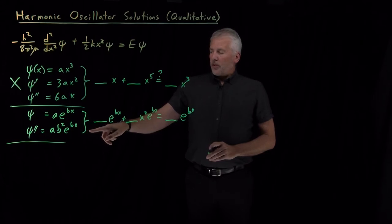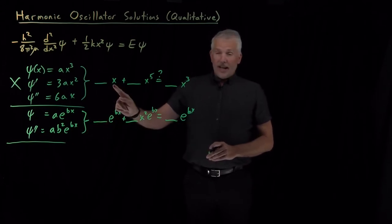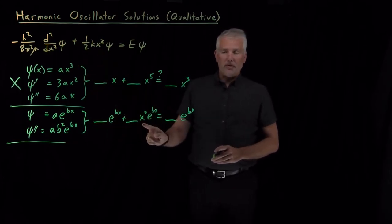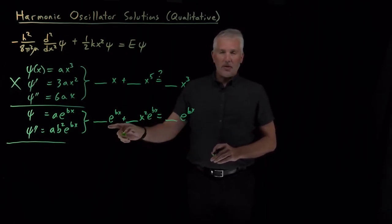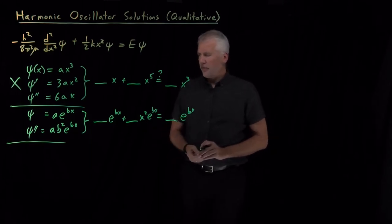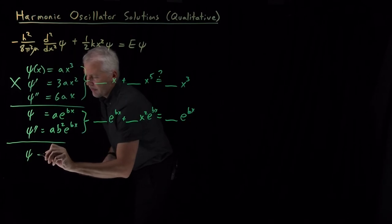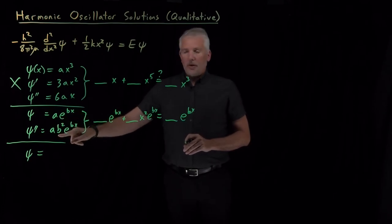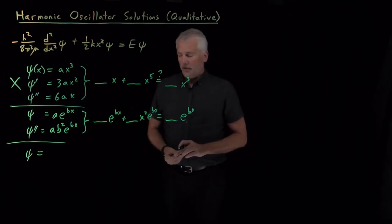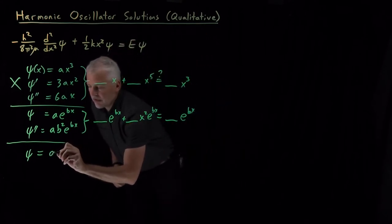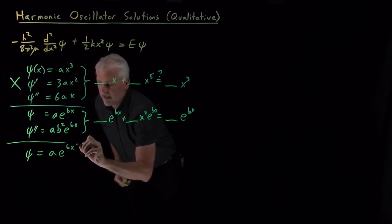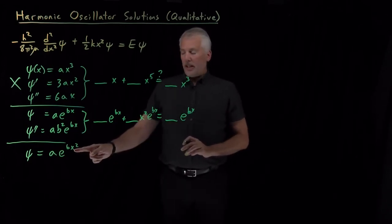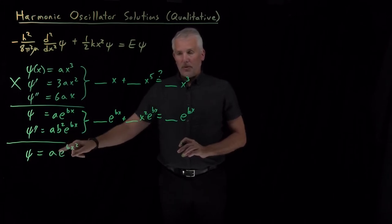Thinking about what went right and wrong: the exponential didn't get knocked down in powers, but what we really need is a function whose second derivative gets knocked up by a couple of powers of x, so terms can match or cancel. We can find such a function if we use an exponential with x squared in the exponent — e^(bx²) — so that when we take the derivative of the exponent, it pulls down factors of x out front.